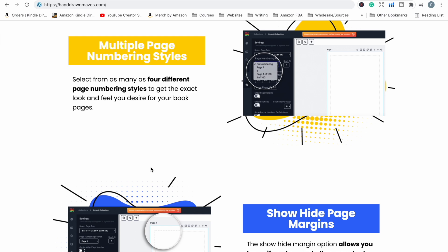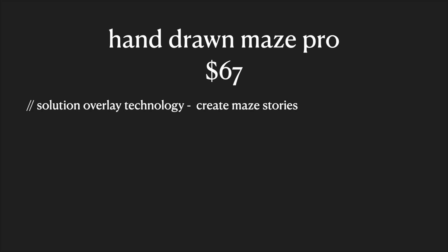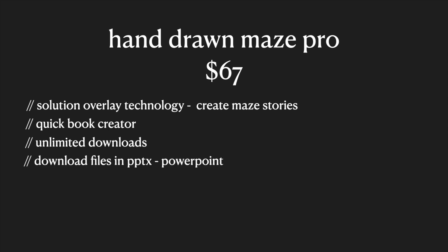The first upgrade you'll be offered is to upgrade to the Hand Drawn Mazes Pro, and the discounted price for that is $67. You get access to the solution overlay technology for creating maze stories, the QuickBook Creator which helps you create a complete maze book with as many mazes as you want in just a few seconds, and unlimited downloads of your books. The big one — which I think is probably the most important part of the pro version — is you can download your files as PowerPoint. If you want to be able to edit your puzzle books in PowerPoint, you will need the pro version, and I think it is completely worth it.